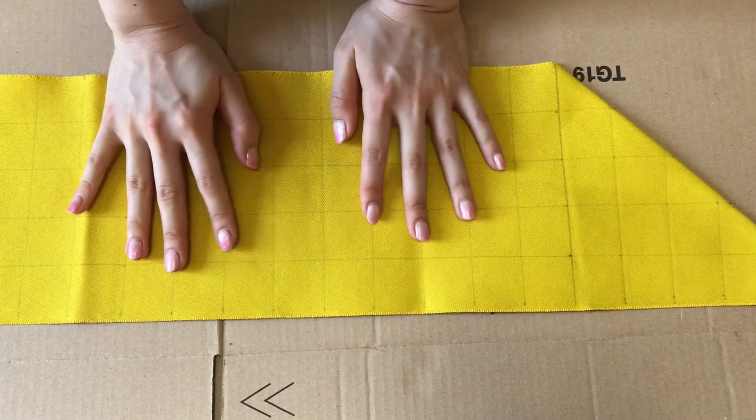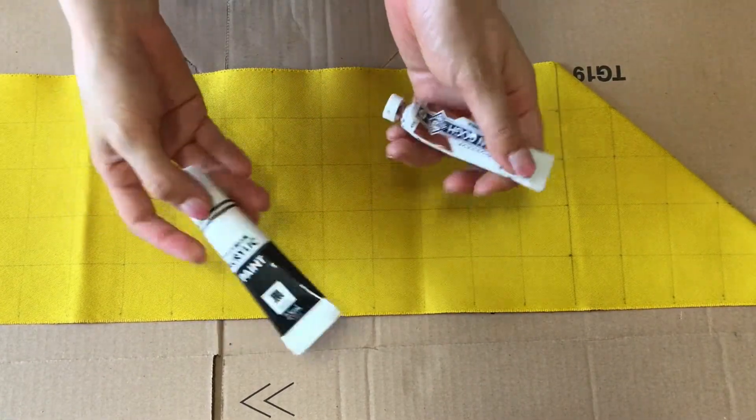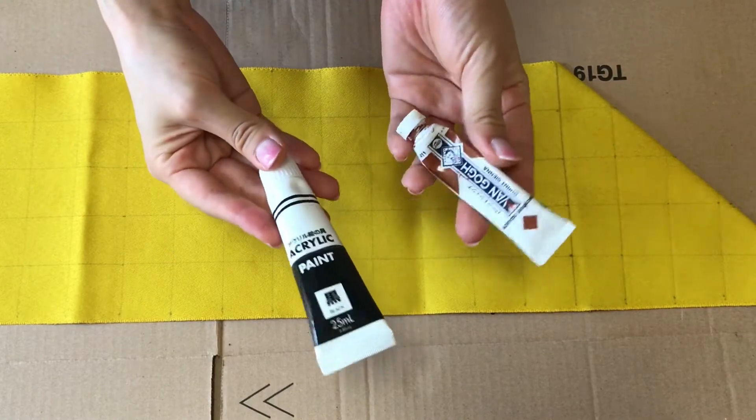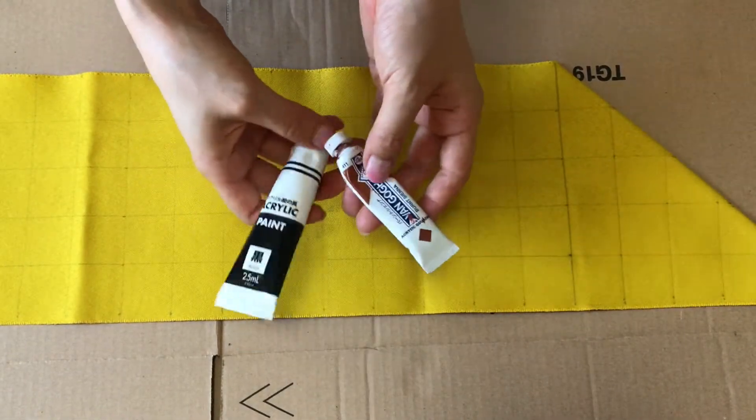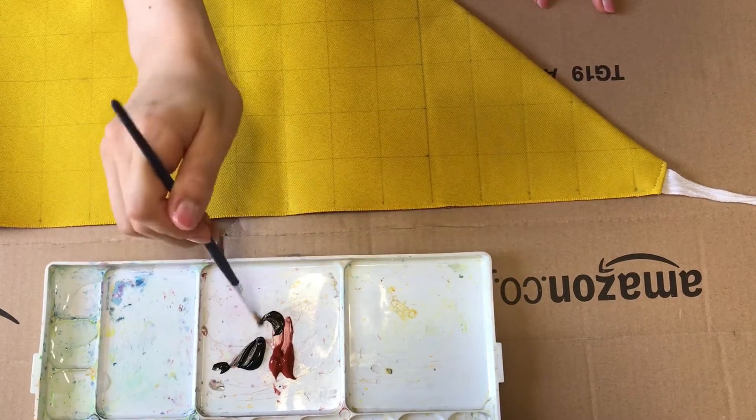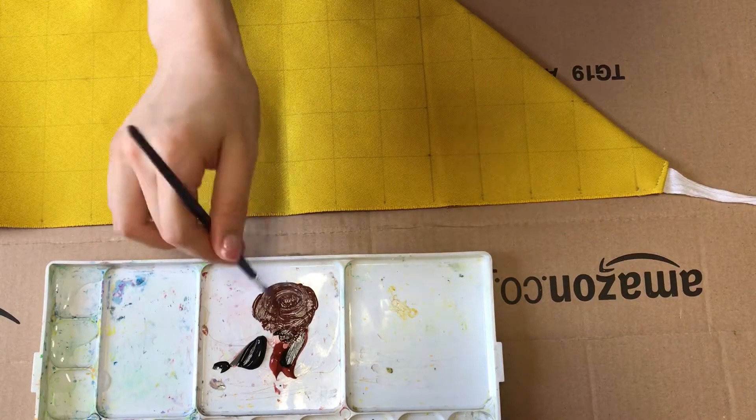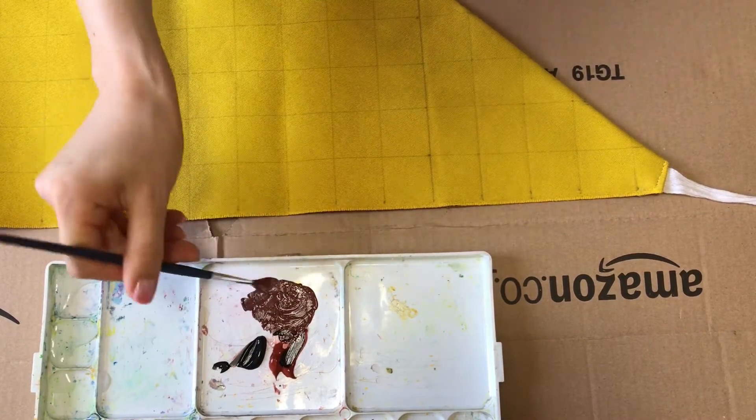The Obi is yellow and brown, so I'm going to mix brown and black. Mix, mix, mix. Maybe this is beautiful dark brown. Let's start.